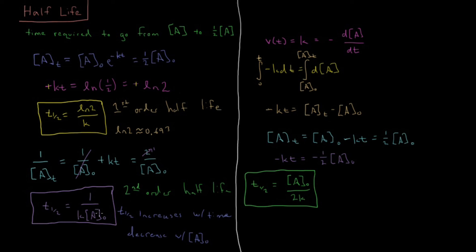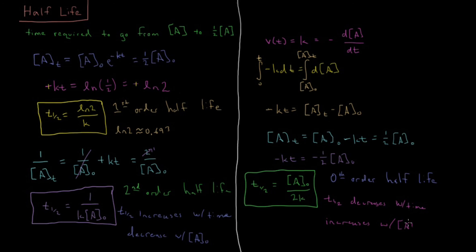That's the opposite of what we saw for the second-order half-life. For zeroth-order reactions, as the concentration of your reactant decreases, your half-life is also decreasing over time — the half-life decreases throughout the course of the reaction as your reactant concentration goes down. And the half-life increases with higher initial concentration, because the rate is constant and it just takes longer to decay. So these are the three half-lives for zero, first, and second-order reactions, and we see why this is particularly useful for first-order reactions in particular.